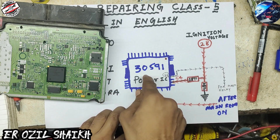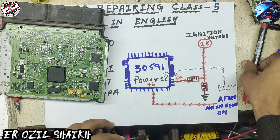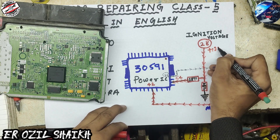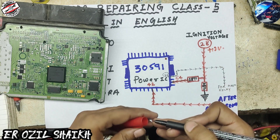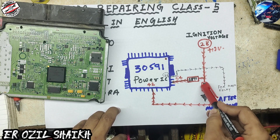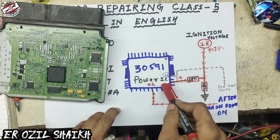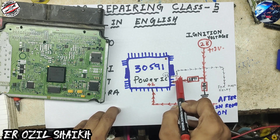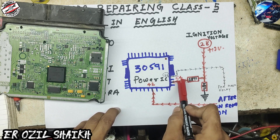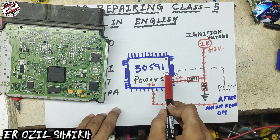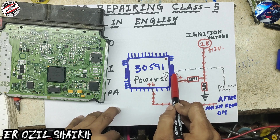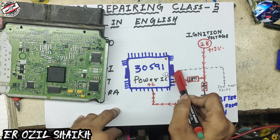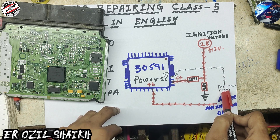When 12 volts ignition voltage comes into this ECM, the 12 volts goes inside to IC pin number 54. When pin number 54 receives this 12-volt ignition signal, pin number 56 creates a ground and sends it to the main relay.